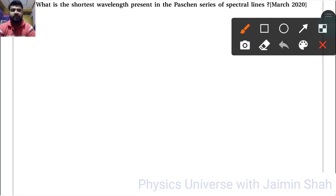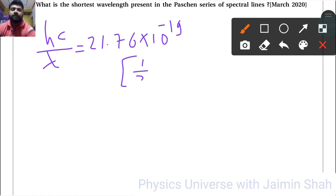What is the shortest wavelength present in the Paschen series of spectral lines? So formula to find: first of all, hc upon lambda is equal to 21.76 into 10 raised to minus 19, 1 upon 3 square minus...